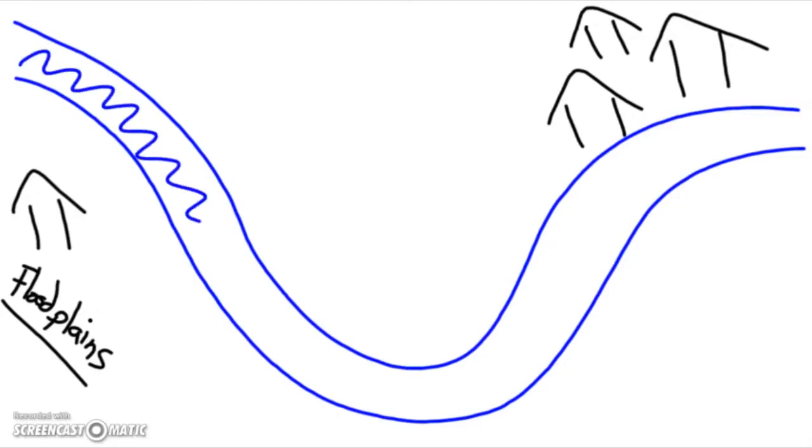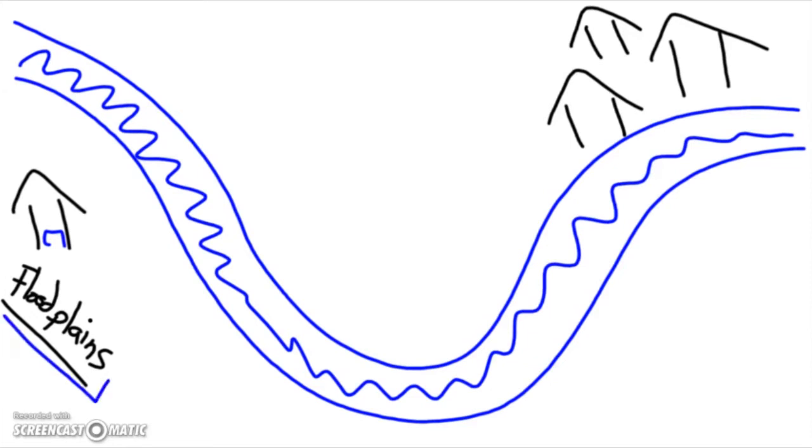So here's a river, okay, and you're building a house, and that house happens to be on what are called floodplains. Floodplains, these are the areas that usually get flooded when a flood happens. They're really low and right next to the river.